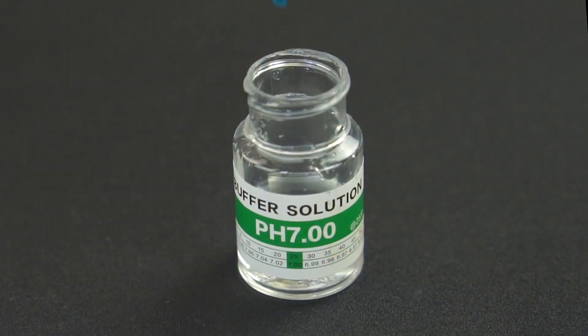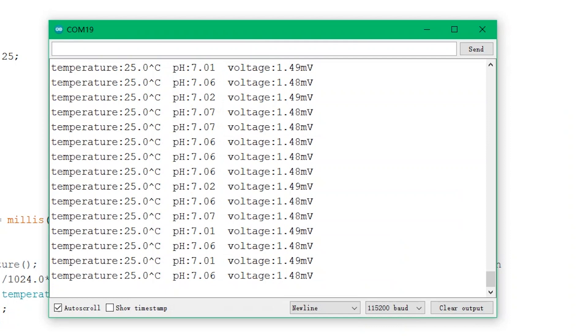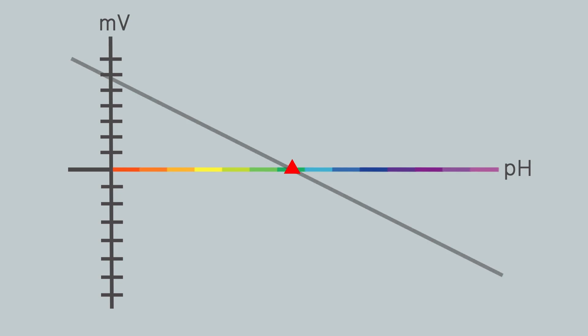Generally, a relatively new electrode just requires one-point calibration to work properly. Calibration will help both find the zero point and compensate for the changes in the curved slope.